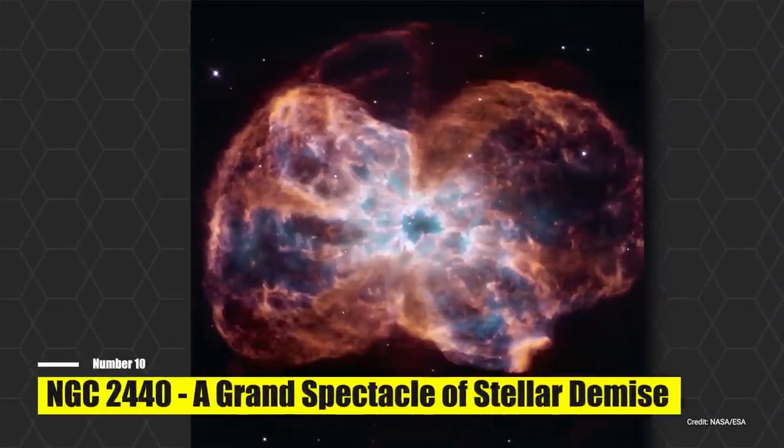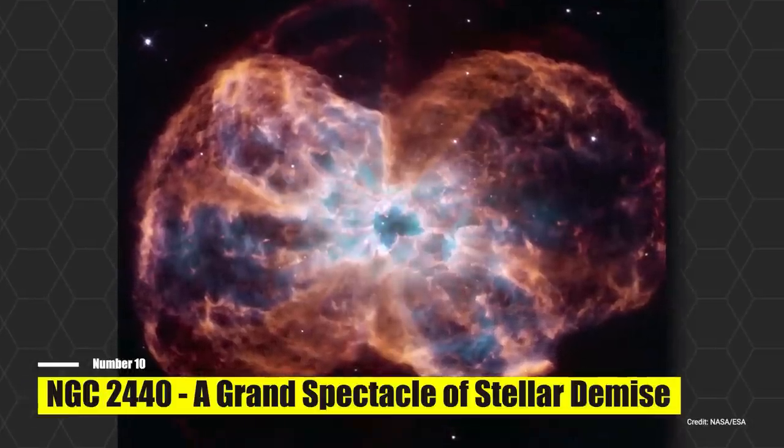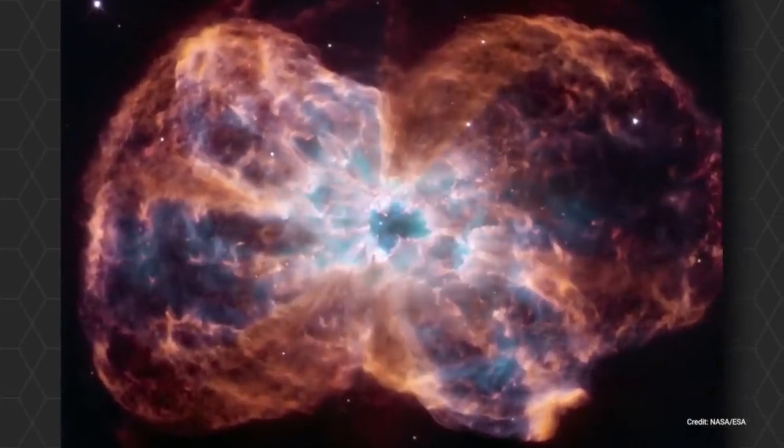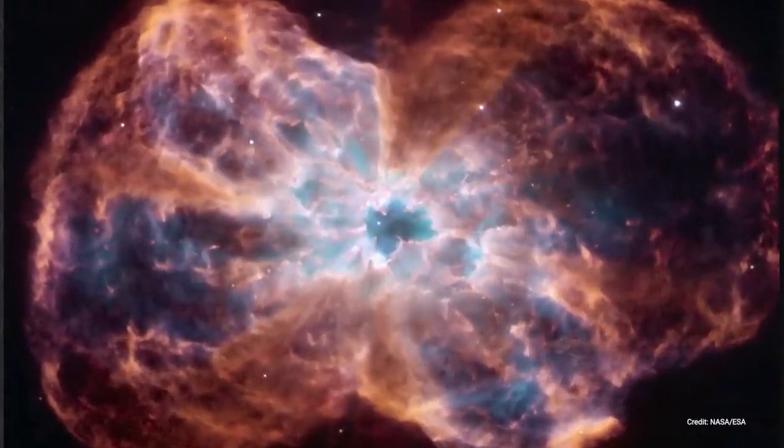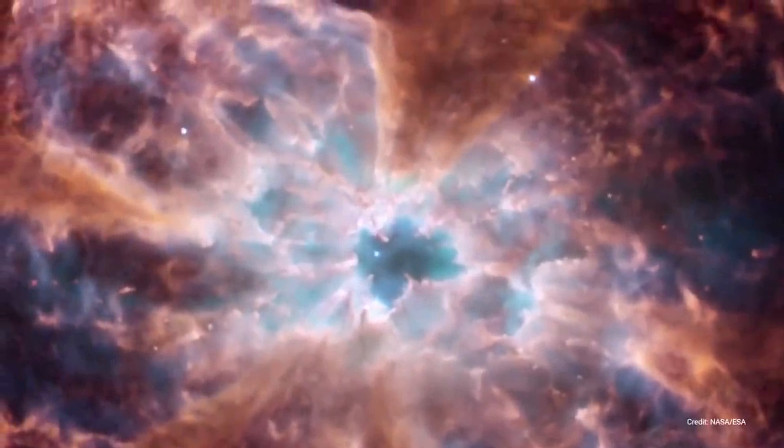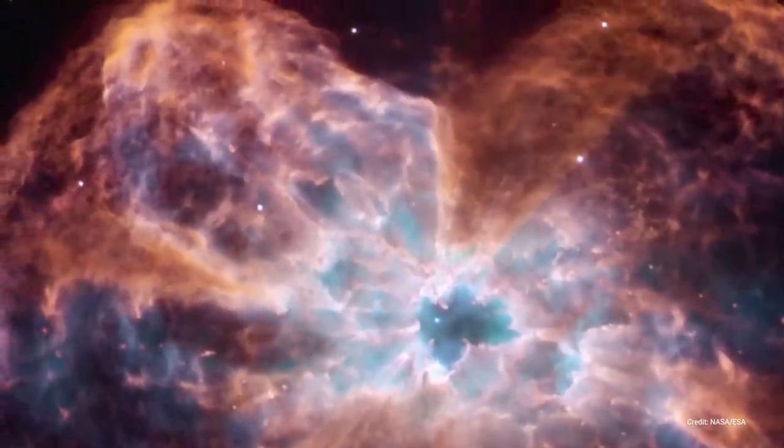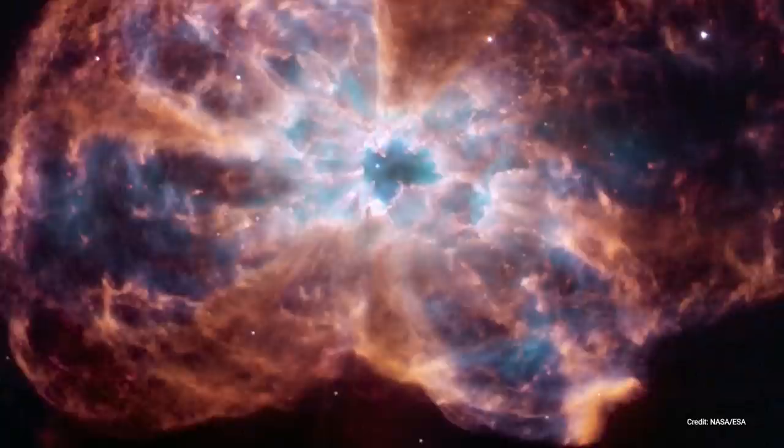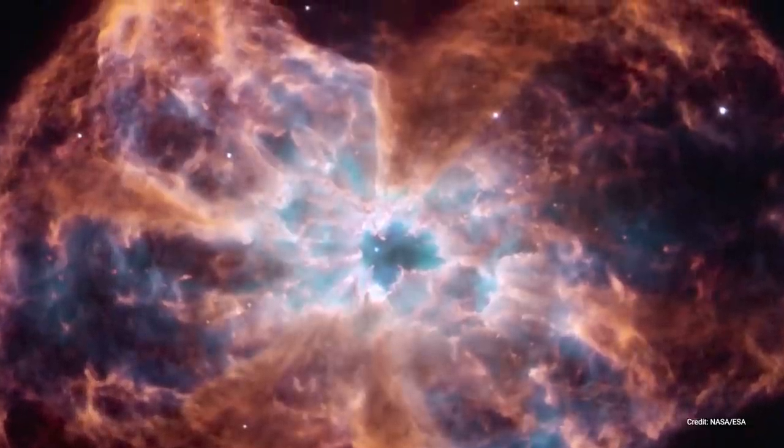Number 10, NGC 2440, a grand spectacle of stellar demise. In a blaze of brilliant hues and gaseous swirls, the James Webb Space Telescope presents an intimate view of a star's spectacular farewell within the NGC 2440 nebula. This star, much like our own sun, has embarked on the last journey of its cosmic existence. As it breathes its final gasps, it discards its outer layers of gas. This expulsion forms a stunning cocoon around the star's dwindling core, a mesmerizing testament to the star's vibrant history. The heart of this celestial extravaganza, lit by ultraviolet light emanating from the dying star, glows with an ethereal radiance.